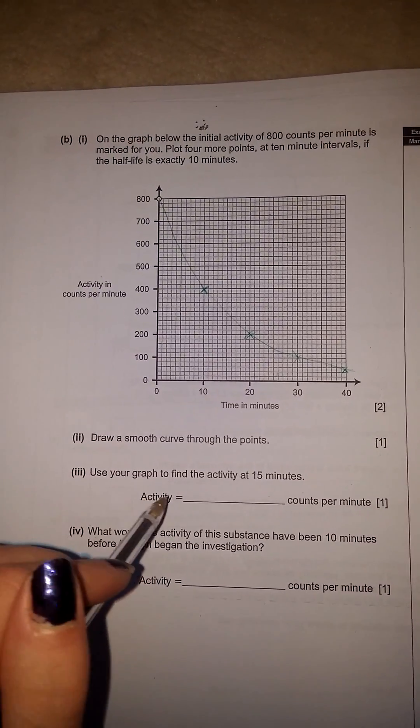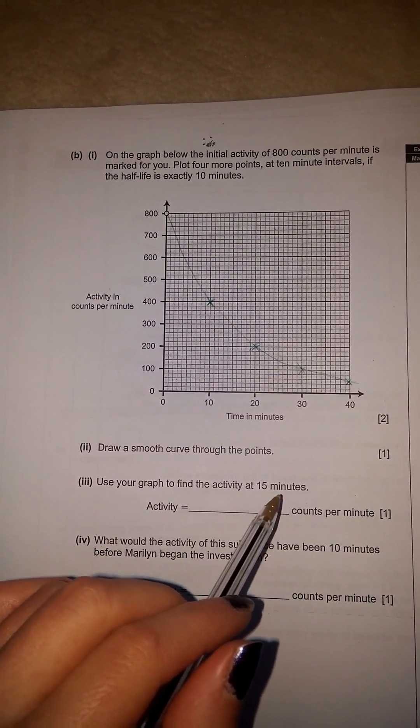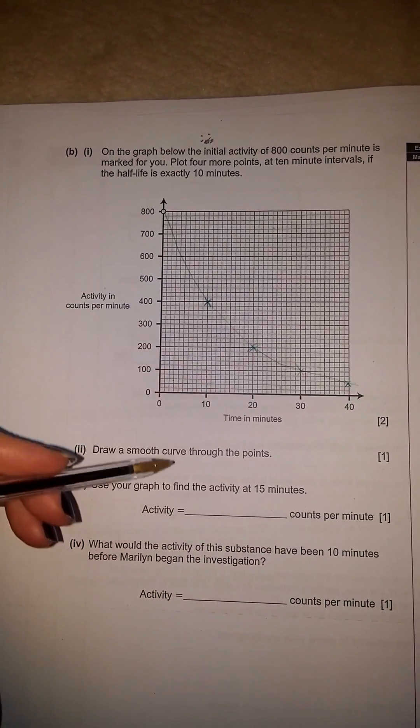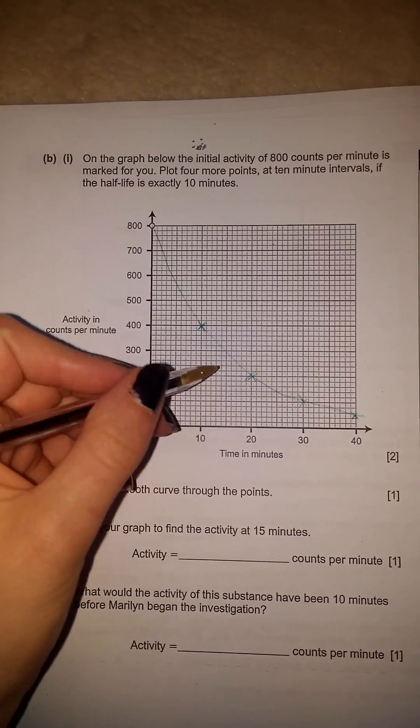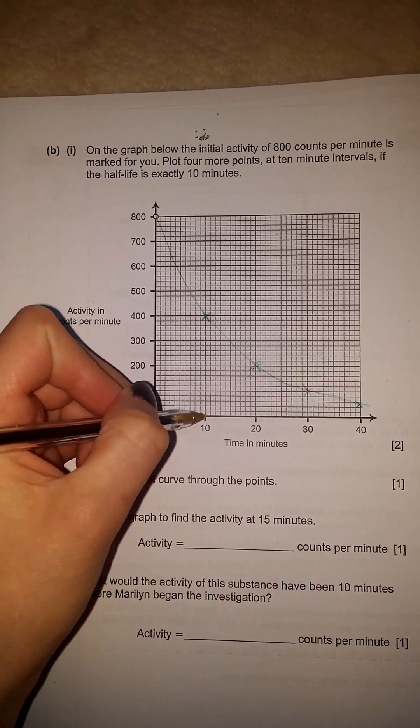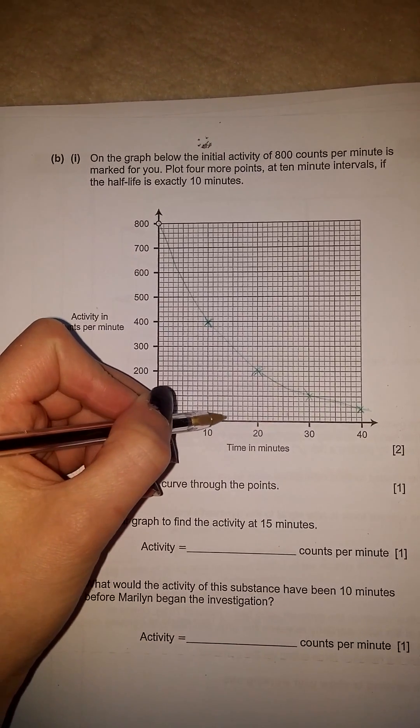Okay, so the next one says, use your graph to find the activity at 15 minutes. So that's where you look at your time axis, and you go along to 15. Now, because there's 10 squares here, each square represents 1, so 15 is in the middle here.